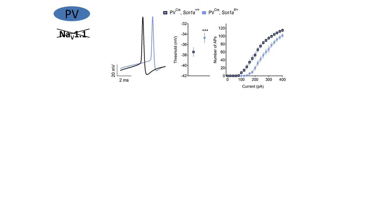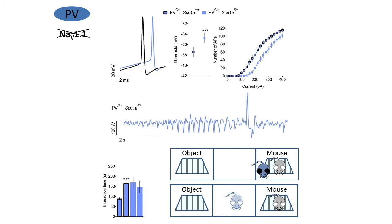On the cellular level, deletion of Nav1.1 in parvalbumin-expressing interneurons resulted in reduced excitability due to increased threshold and rheobase. This deletion was sufficient to cause epilepsy, and these mice had thermally induced seizures and abnormal cortical activity. Dysfunction of Nav1.1 in parvalbumin neurons was also sufficient to cause social interaction deficits as observed in the three-chamber social interaction test.